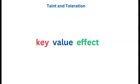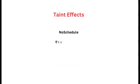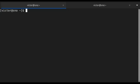Every taint has a key, value, and effect. There are different types of taint effects: no schedule, prefer no schedule, and no execute. Let's taint a node so you can follow along.